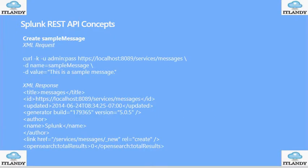For today we will cover more examples around creating a sample message. This includes the XML request and XML response. As you can see, this is a very basic example utilizing CURL — we mentioned that earlier — to get the Universal Resource Locator, and then later on we will do CURL which will do the Universal Resource Identifier.